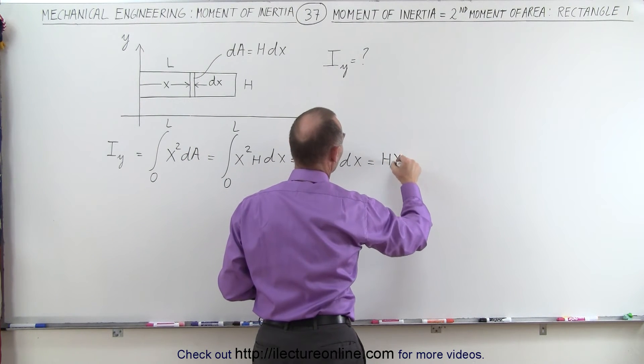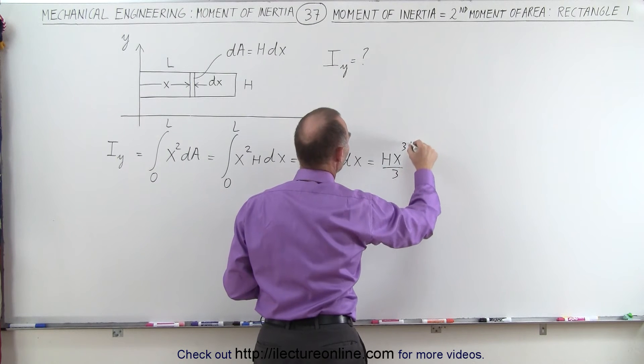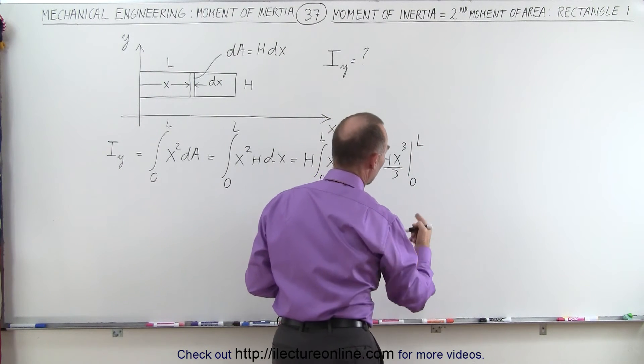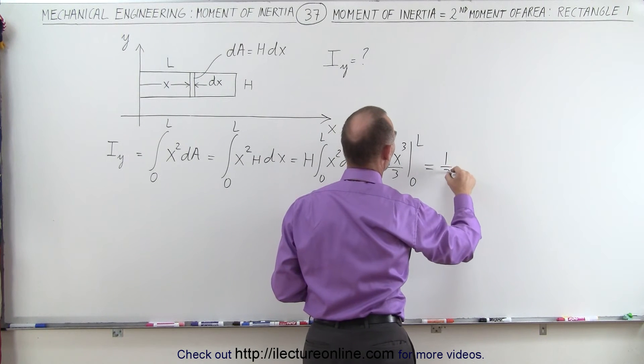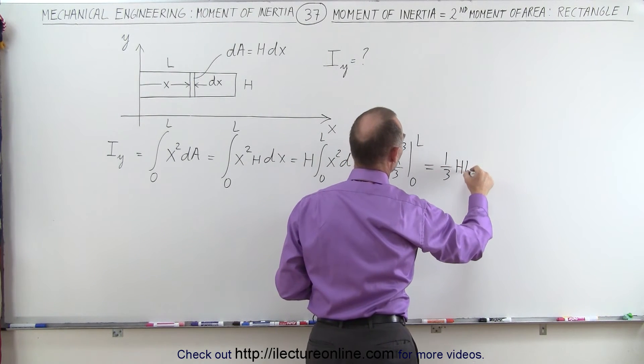This is h x cubed over three, evaluated from zero to L. So when we plug in the lower limit, we get zero. When we plug in the upper limit, we get one-third h L cubed.